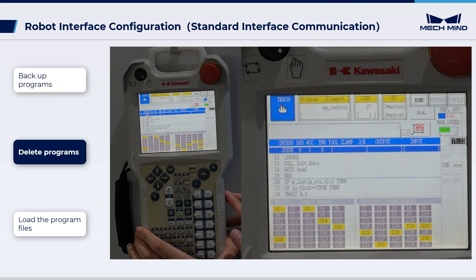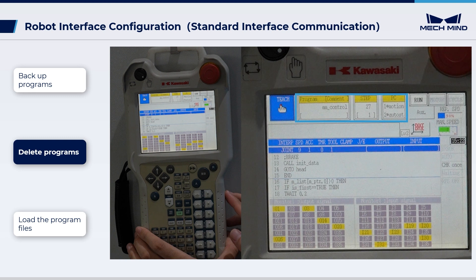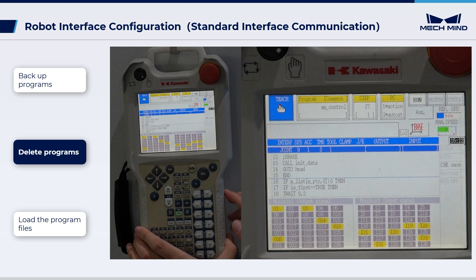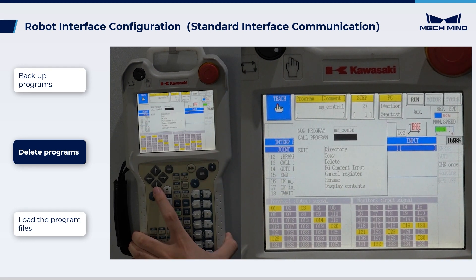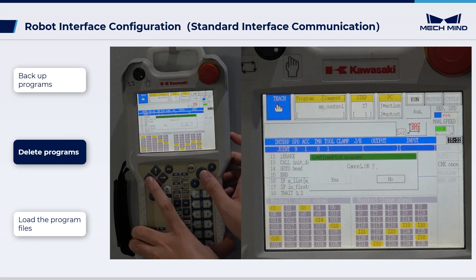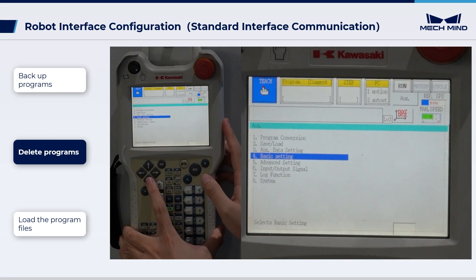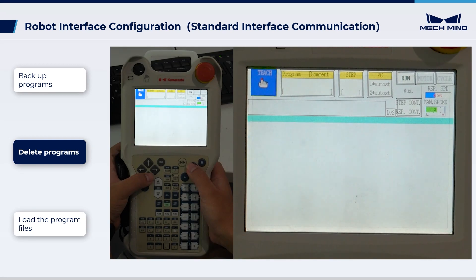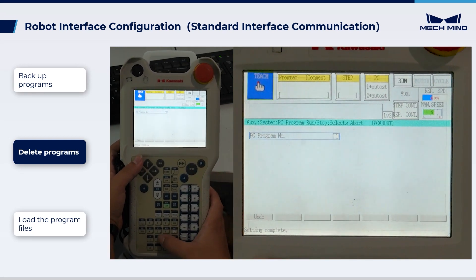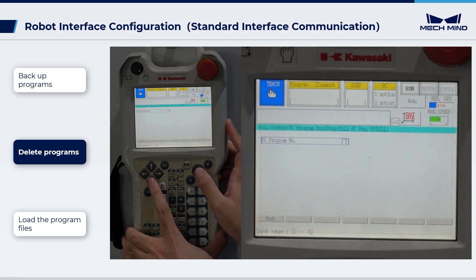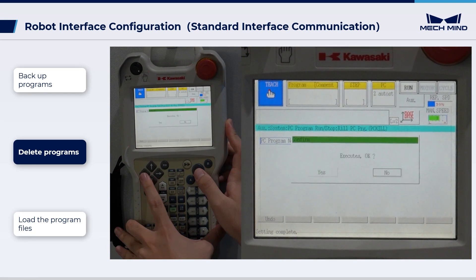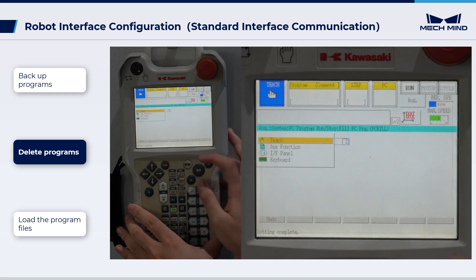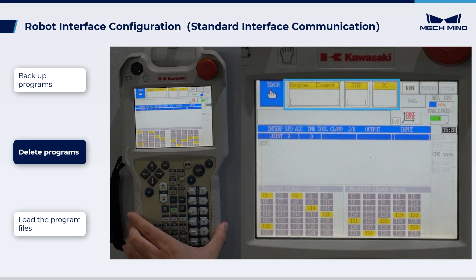Before loading files, check if there are registered programs in the program area on the teach pendant. If yes, kill these programs: select Program and select Cancel Register in the drop-down menu. Then select UX function, System, PC Program Run/Stop. Choose Abort, then Abort All Programs, and kill all PC programs. If the top three columns are empty, the preparation process before loading is complete.